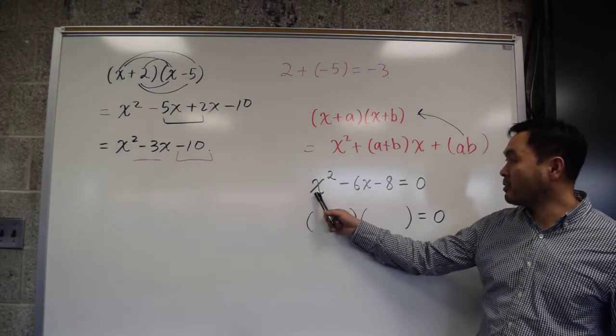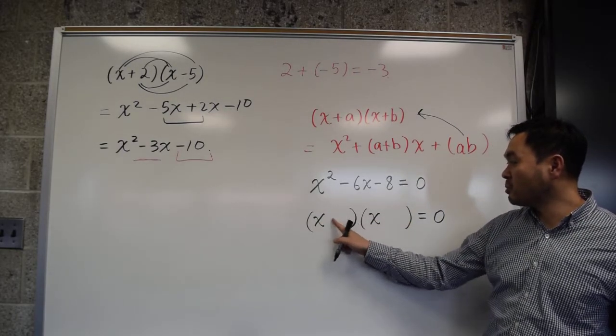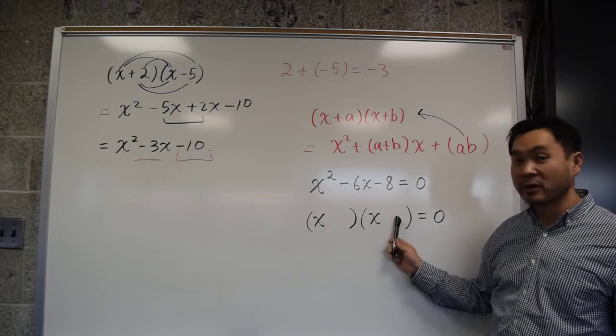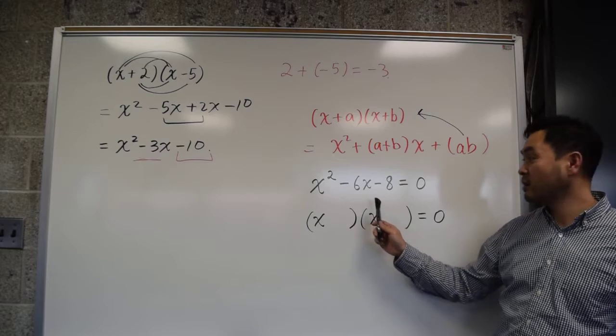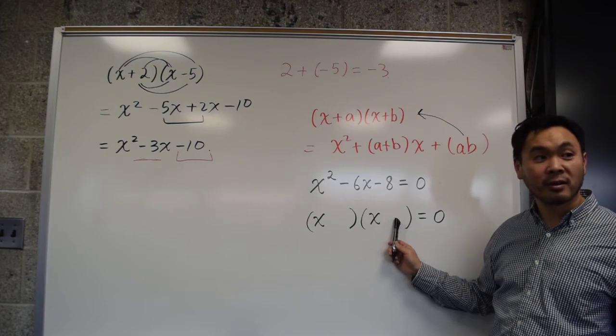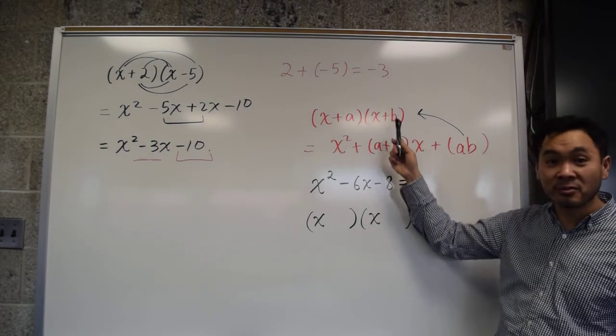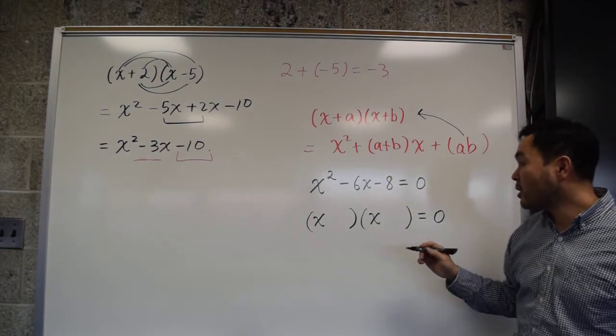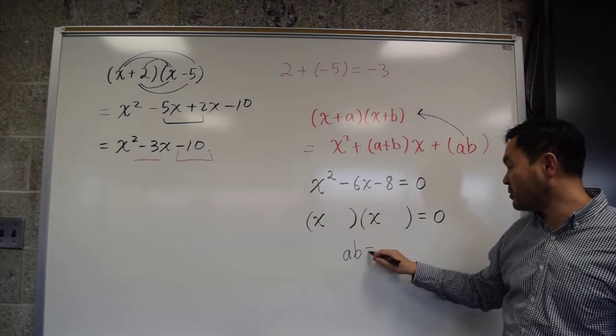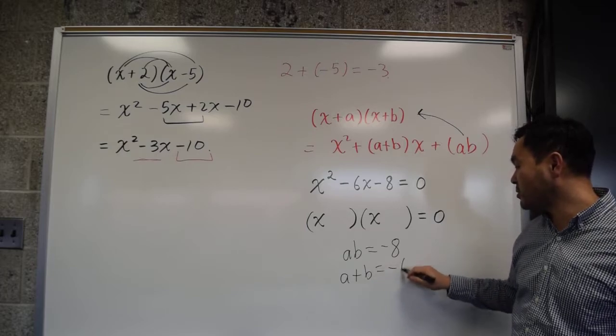Now, the way you solve this is by writing this as something times something equal to 0. And since you have x², it must have x here and x there. And there are some unknown numbers, a and b. But we know that the sum of a plus b is what? It's this number, -6, right? What's a times b? It's this number, -8. That's what we just observed, right? Good. So, now let's think about two numbers that multiply to -8 and add to -6.